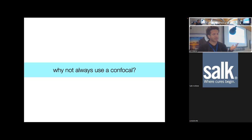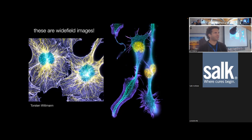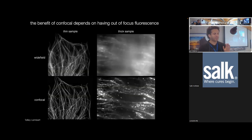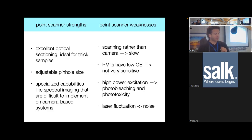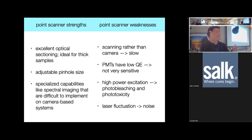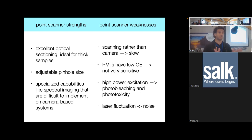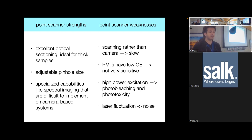Why not always use a confocal? Some amazing images are wide-field. Confocal only becomes valuable when imaging thicker samples. A point scanner gives amazing optical sectioning, is great for fixed samples, you can adjust pinhole size precisely, and you can do multi-detector imaging capturing multiple colors nearly simultaneously. But raster scanning is slow, point-scanning detectors are usually less sensitive than camera-based systems, you give a huge laser dose to your sample because so much light is thrown away, and laser fluctuations are an issue. So there are significant downsides.